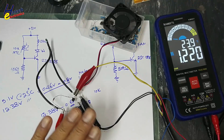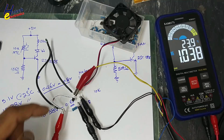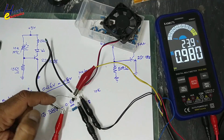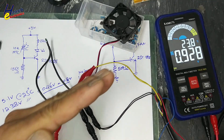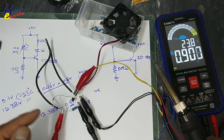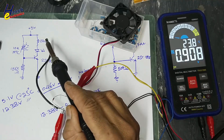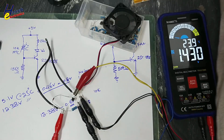Without the 1N4148 diode, the fan speed increases or decreases linearly with change in temperature. But with the diode, as temperature increases, the fan will turn on directly at a threshold rather than gradually.